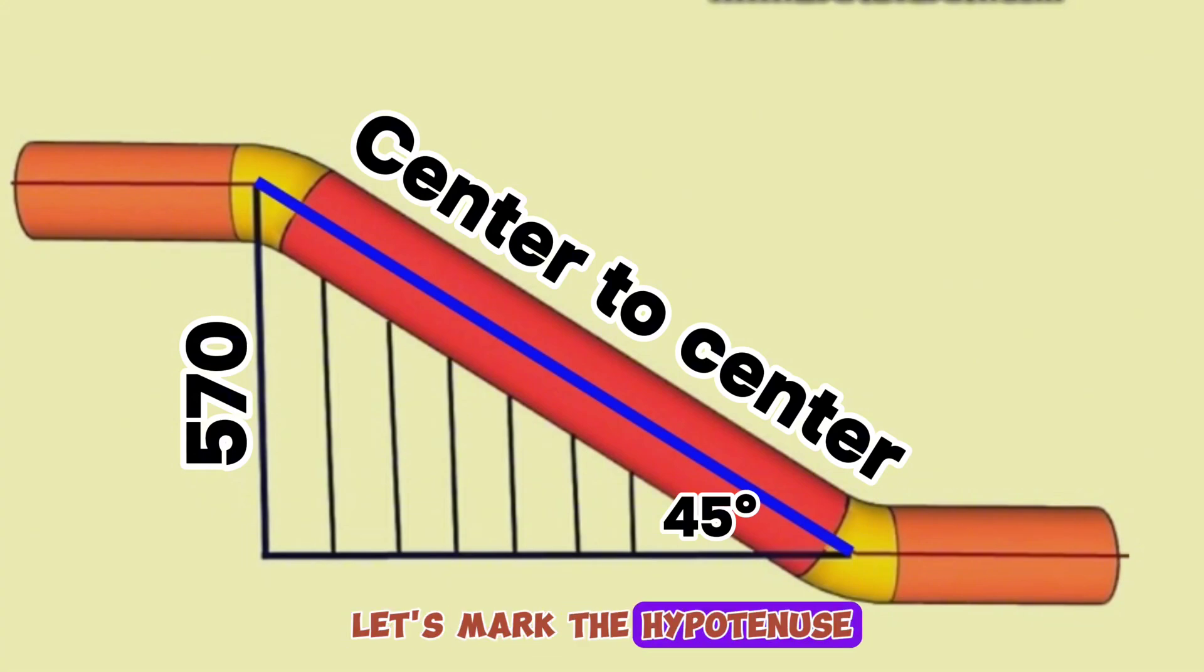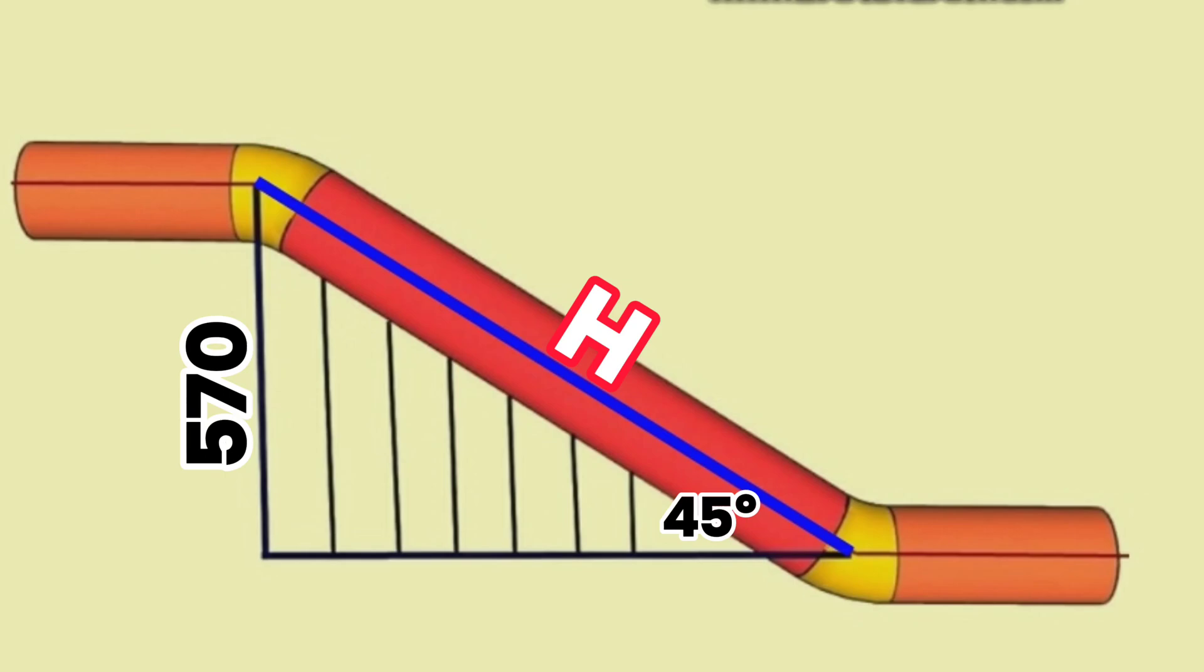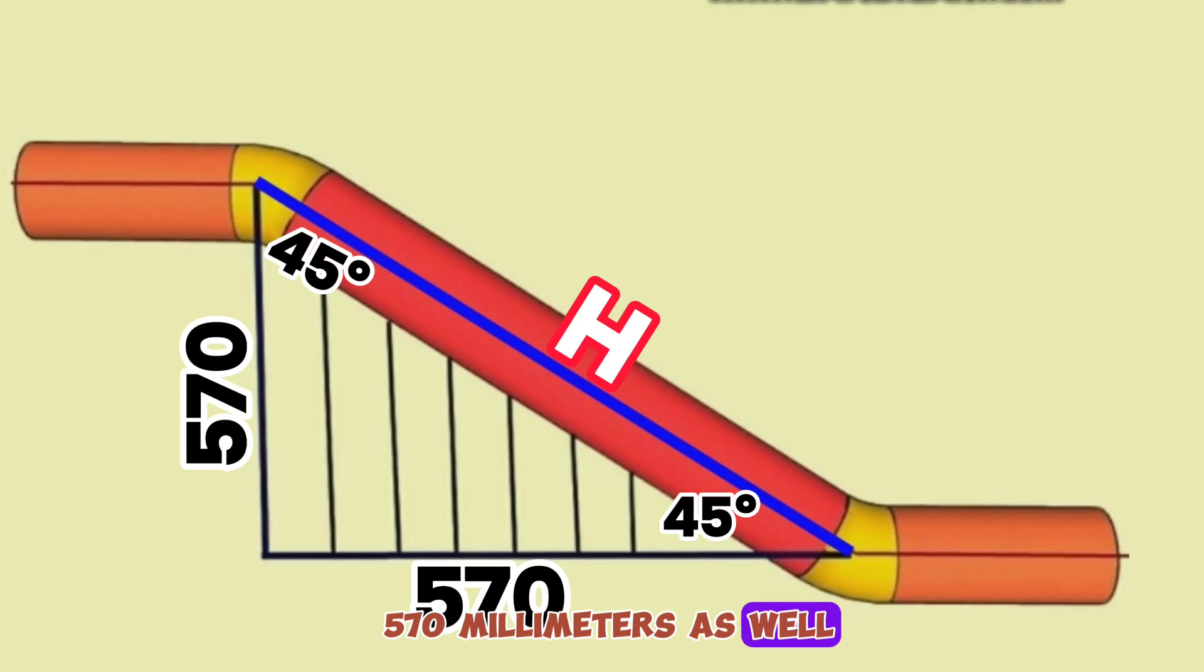Let's mark the hypotenuse of this right-angle triangle with the letter H. Since one of the angles of this right triangle is 45 degrees, automatically the other angle will be 45 degrees and the other side will be 570 mm as well.